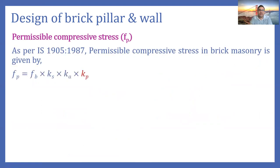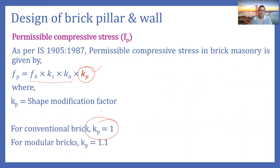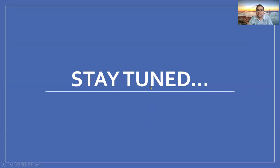The fourth parameter, kp, is the shape modification factor. It depends on the type of brick used: for conventional brick kp = 1.0, and for modular brick kp = 1.1. This completes the theory for finding fp. Once fp is determined, the load carrying capacity can be calculated or element dimensions can be designed. In the next part, a design example will be worked through to understand this theory.